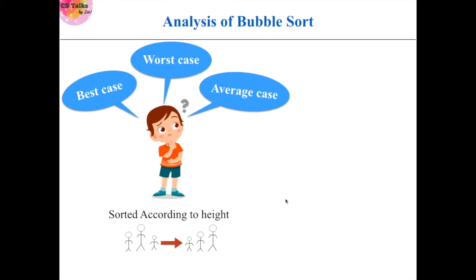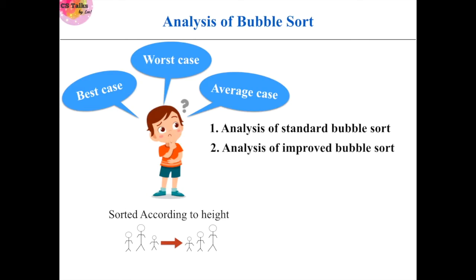In this video we are going to discuss the time complexity of bubble sort. In the previous video we saw two versions of bubble sort: the standard version and an improved version. Now we will see the best, worst, and average cases of standard bubble sort, and then how efficiency is improved in the optimized bubble sort.